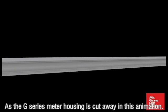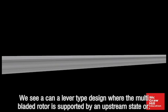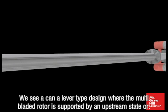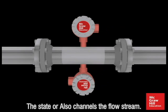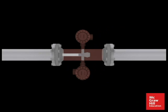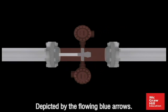As the G-series meter housing is cut away in this animation, we see a cantilever-type design where the multi-bladed rotor is supported by an upstream stator. The stator also channels the flow stream, depicted by the flowing blue arrows, through the rotor.